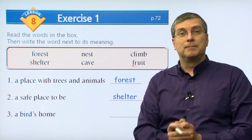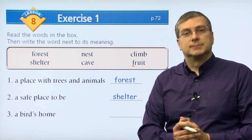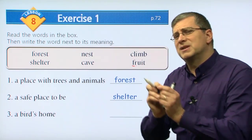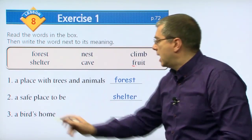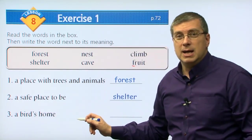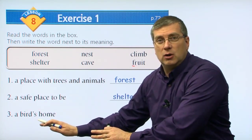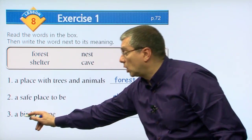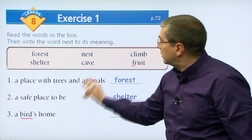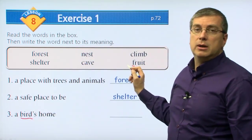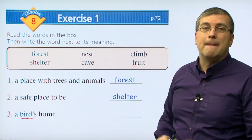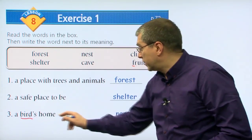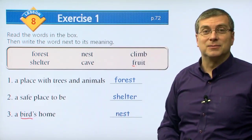Shelter very basically just means a safe place to be. If you're safe there, it is a shelter. Number three is more specific - we're looking at a specific type of shelter. A bird's home - not a wild dog's home, not a person's shelter, but a bird's home. Which word is a bird's shelter? It is, of course, nest. A bird's home is a nest.